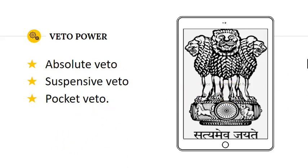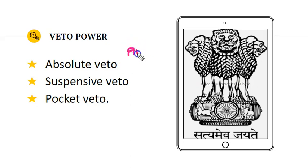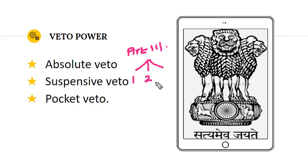Before discussing these veto types, it is important to understand when a bill becomes an act. A bill becomes an act when the President signs it after it has been passed by both Houses of Parliament. Under Article 111 of the Indian Constitution, when a bill comes to the President, he can make three decisions: he can give assent to the bill, he can withhold assent, or he can return the bill to the Houses for reconsideration with or without amendments. If the House passes the bill again without amendments, the President must sign it.